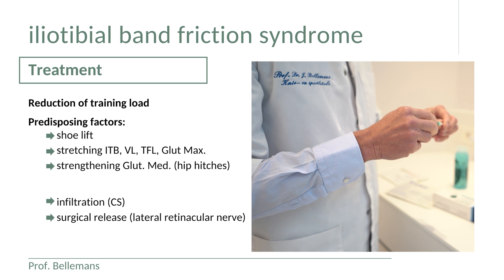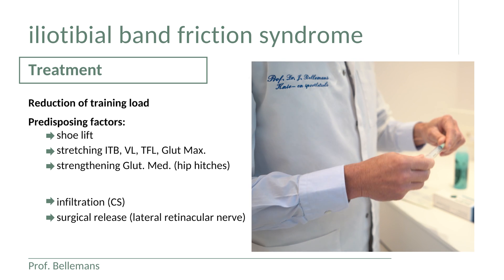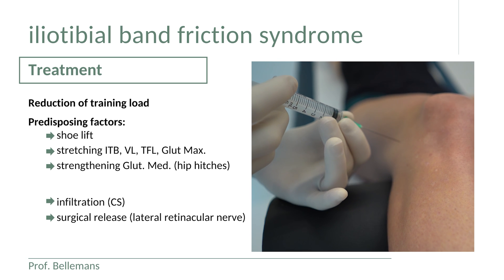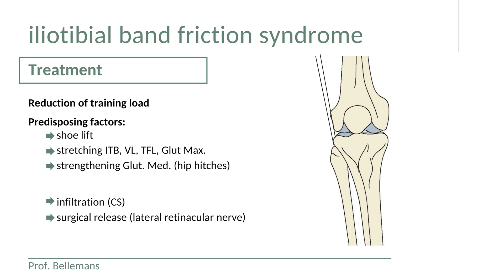If conservative measures do not work, the doctor may consider a local infiltration with a corticosteroid. Such an injection has a very strong anti-inflammatory effect but is also catabolic, meaning it weakens the injected area, so it should only be performed once or twice at most.